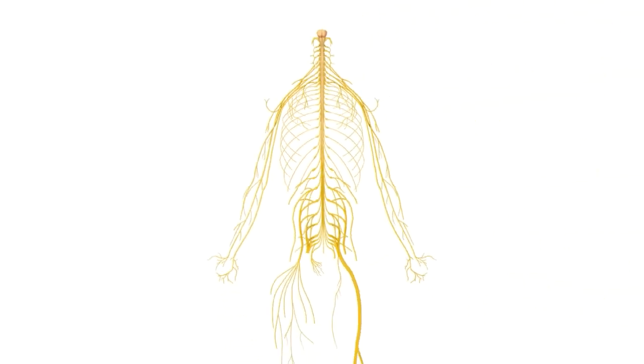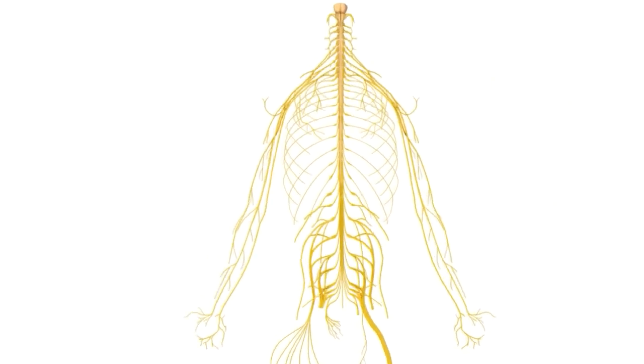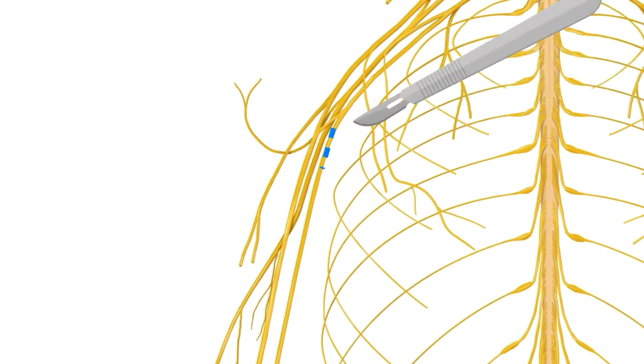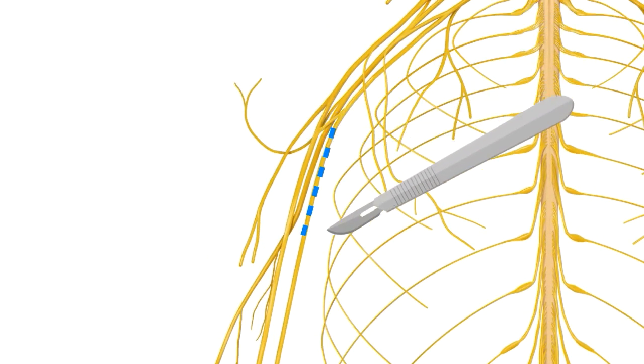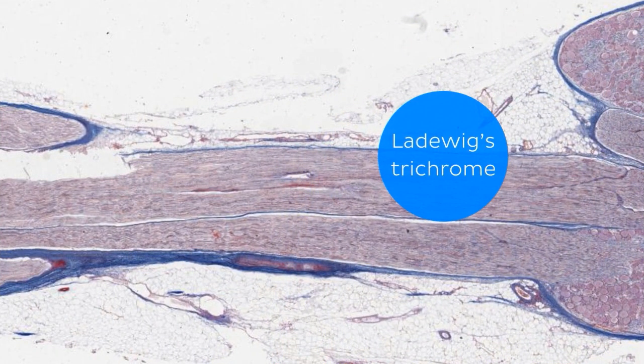All right, let's take a closer look at what peripheral nerves are, using a longitudinal view as our example. So, if we take a peripheral nerve and cut it longitudinally like so, we end up with something like this on our micrograph. This section is stained with something called Laidwig's trichome,